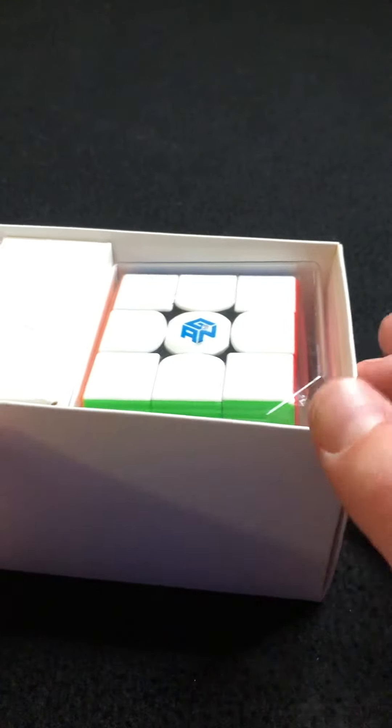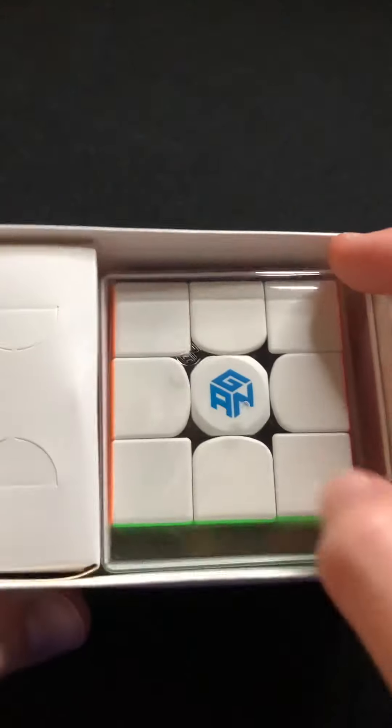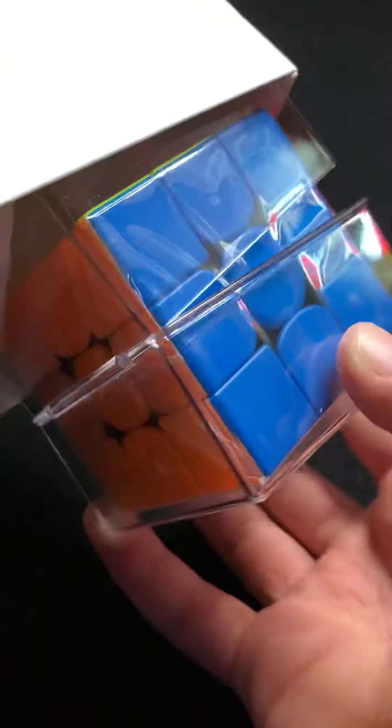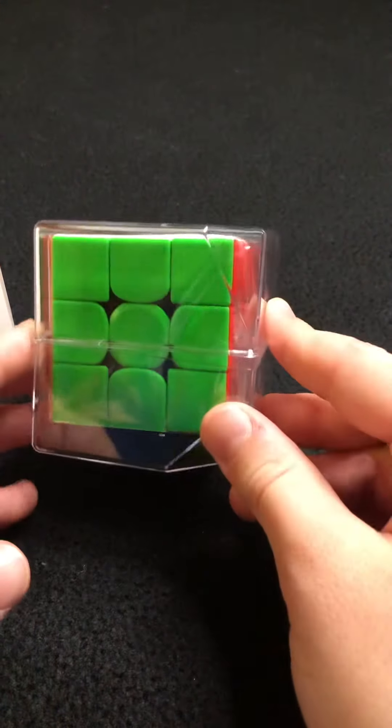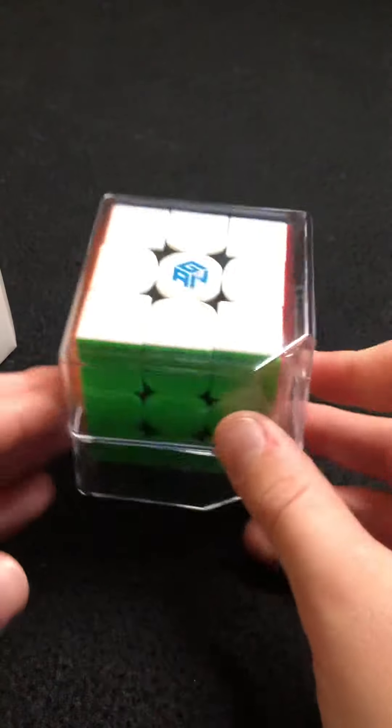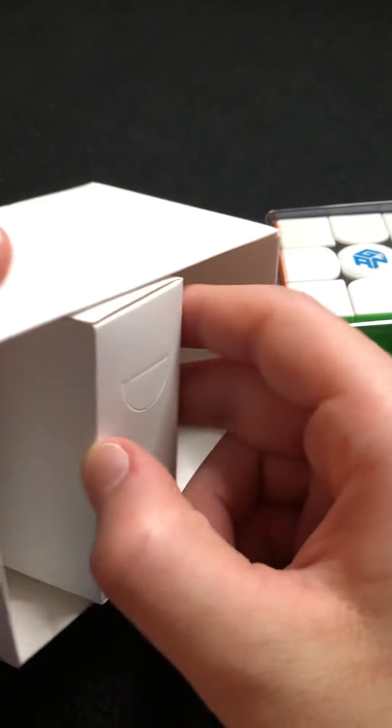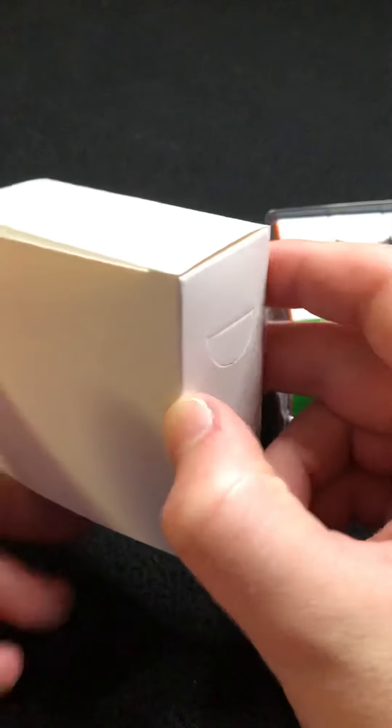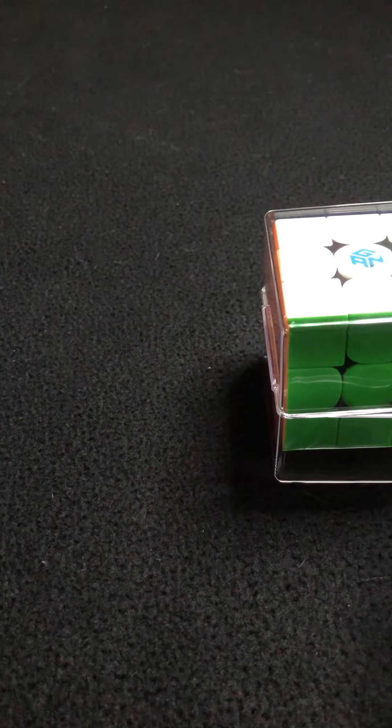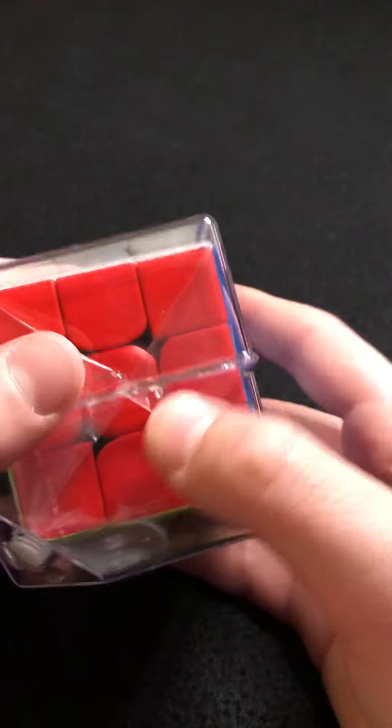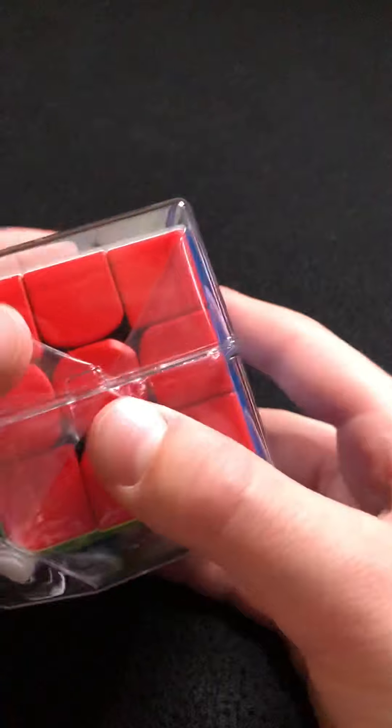Now we get to the real stuff, we have the cube itself. Beautiful cube, amazing, looks fantastic. Put that aside. We have this box which we'll go over what's inside in a few minutes after we test out the cube. I'm just going to set that to the side. How do we open this? Just snaps down, opens up real easy.